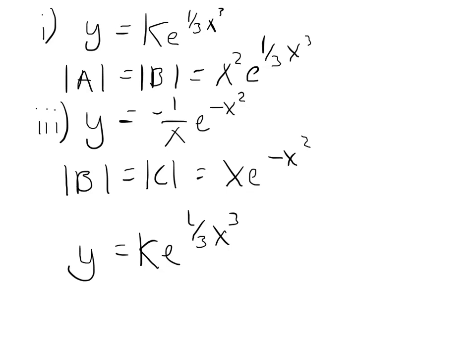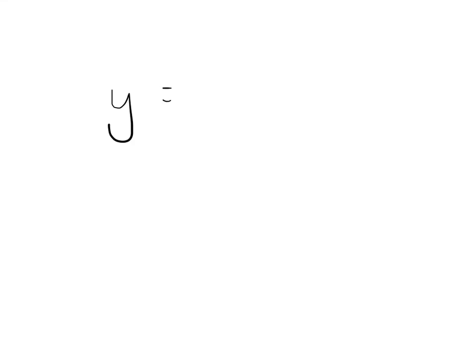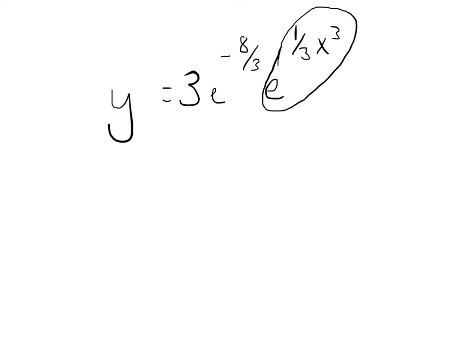We can now plug in the initial condition we were given. y of 2 equals k e to the one third times 8, which equals 3 from the given condition. So k equals 3 e to the minus 8 over 3. This means our final approximate solution is y equal to 3 e to the minus 8 over 3 times e to the one third x cubed. The original question asked what happens to y at large x, and as we can see from this exponential term, as x increases, y also increases. So as x tends to infinity, y also tends to infinity.